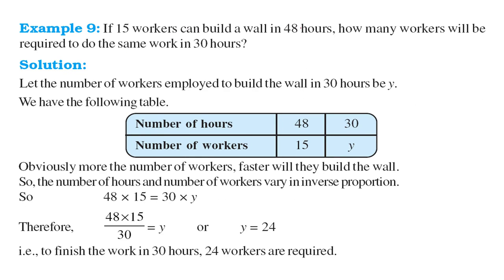If 15 workers can build a wall in 48 hours. So number of hours 48, number of workers 15. How many workers will be required to do the same work in 30 hours? So this is 30 hours. We don't know what is y. So 48 into 15 will be equal to 30 into y because they are in inverse proportion. More the number of workers, faster the wall will be built. So just divide this 48 into 15 by 30. You get y equal to 24.